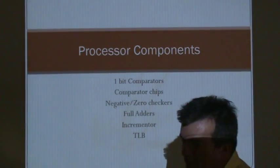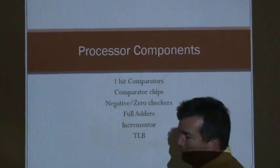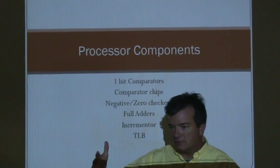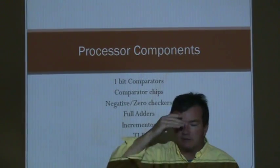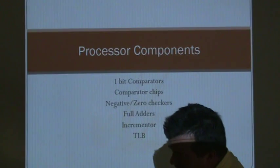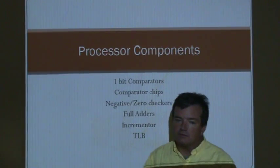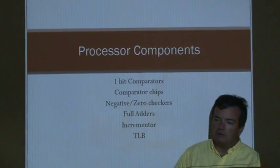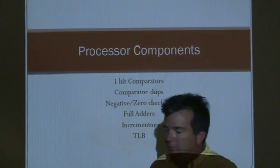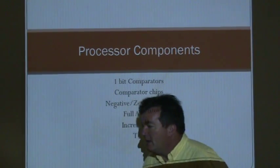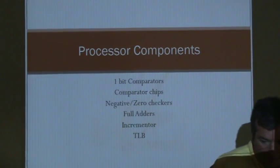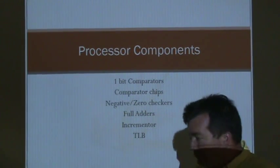Over the course we have been talking about how a processor works, the different components to a processor. At certain points in the course, we just said, oh, this is a box that does something — takes a bunch of bits and has an output to it. I thought this would be a good time to stop and talk about some of the components that are inside of the processor.